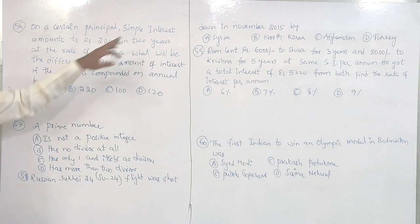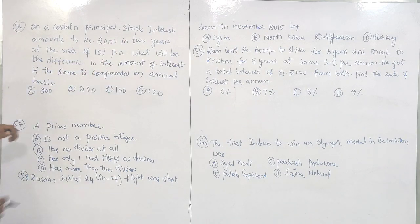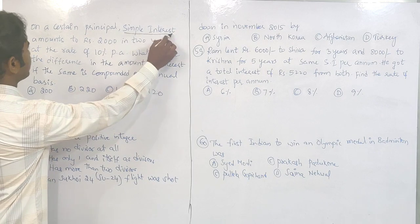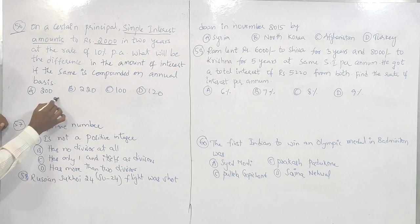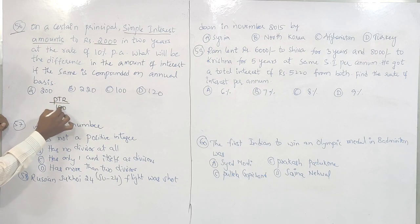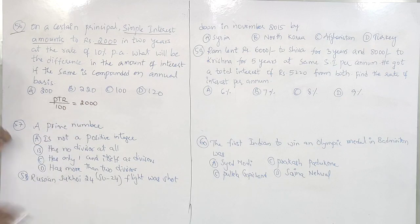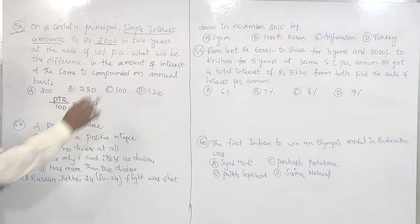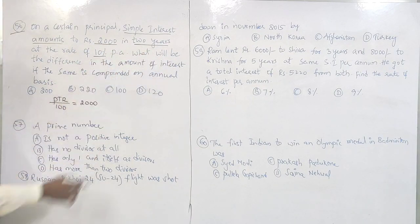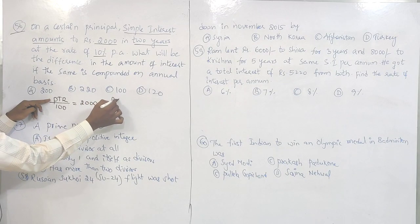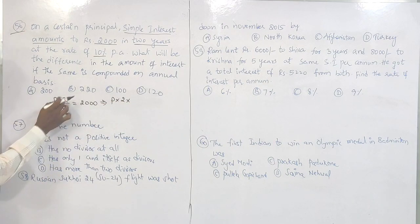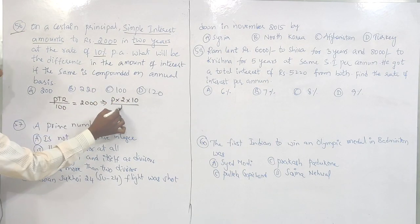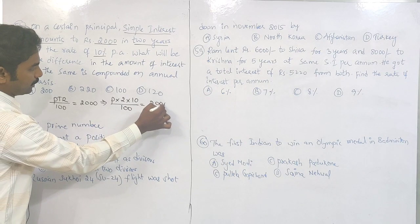Question number 56 is related to simple interest and compound interest. Simple interest amounts to 2000 rupees. The formula for simple interest is PTR/100, which equals 2000. Time is 2 years, rate of interest is 10%. Substituting: P × 2 × 10 / 100 = 2000. The zeros cancel, giving P × 2/10 = 2000, so the principal is 10,000 rupees.